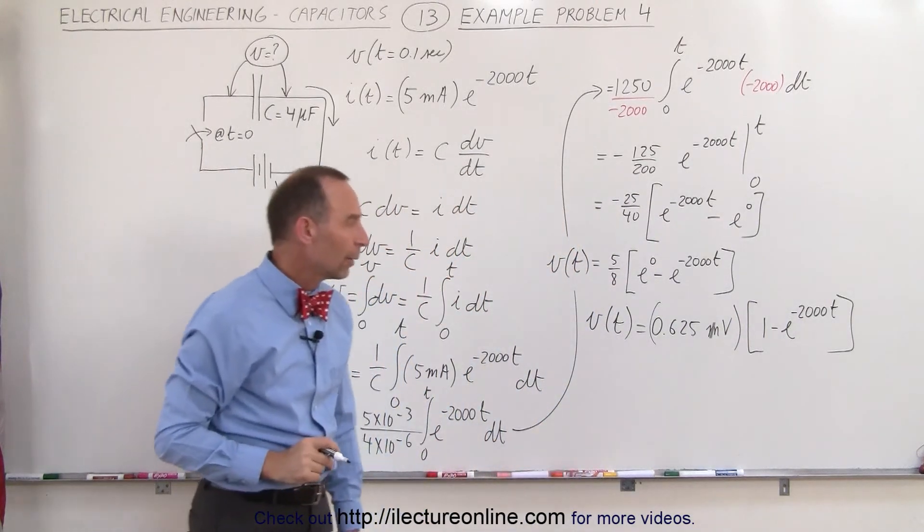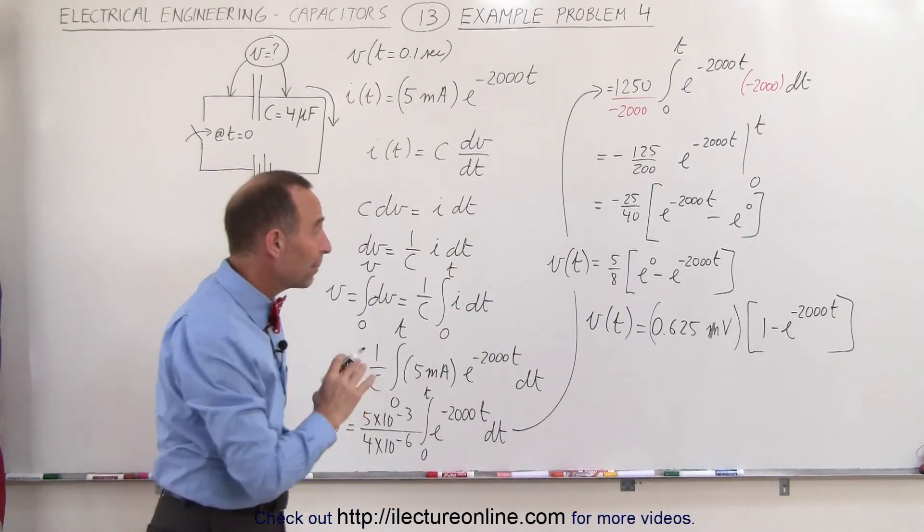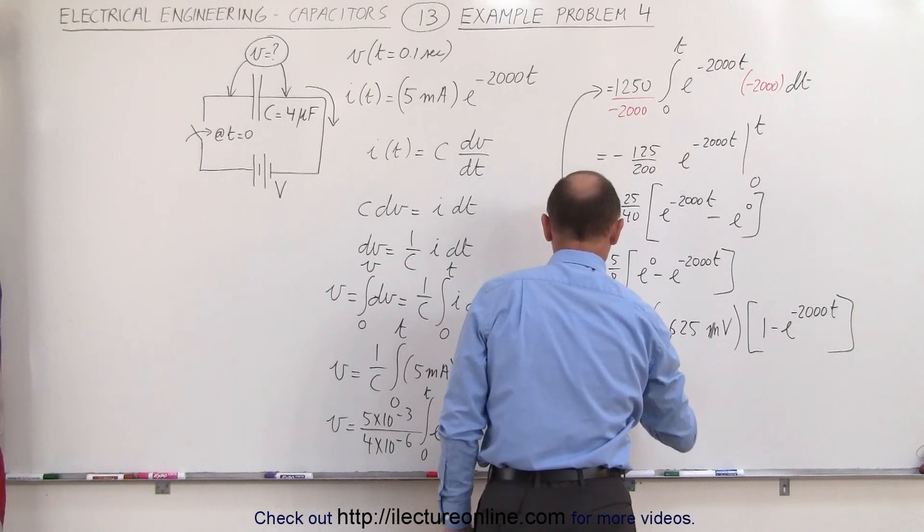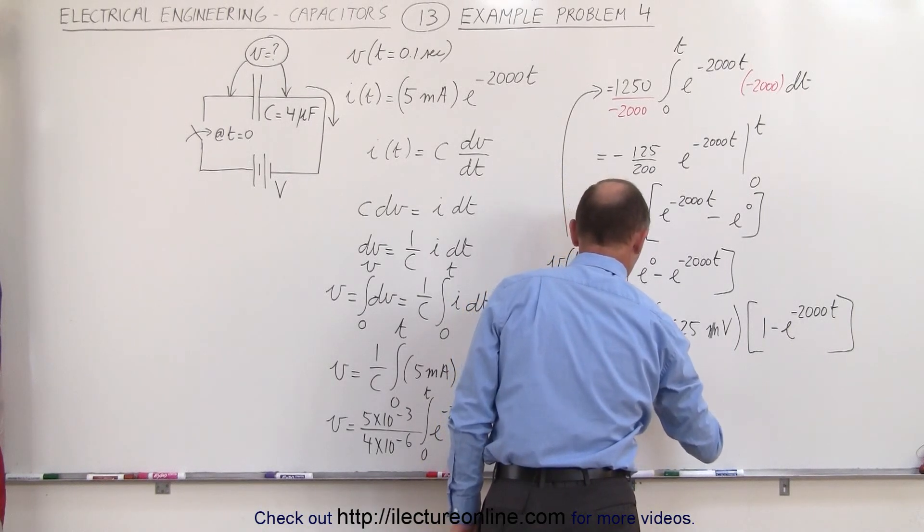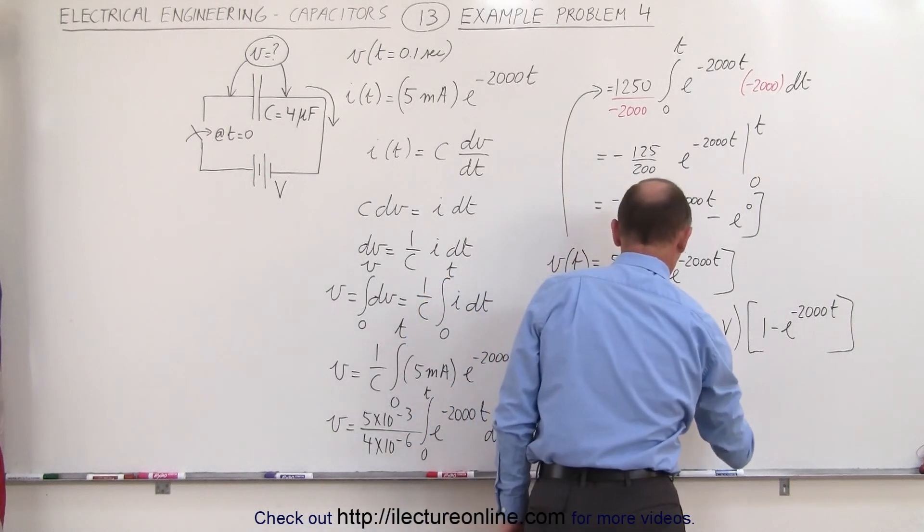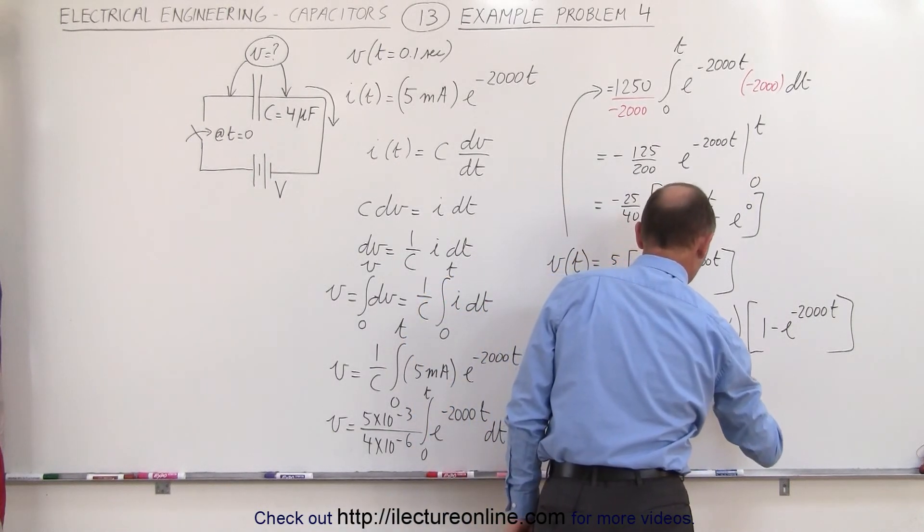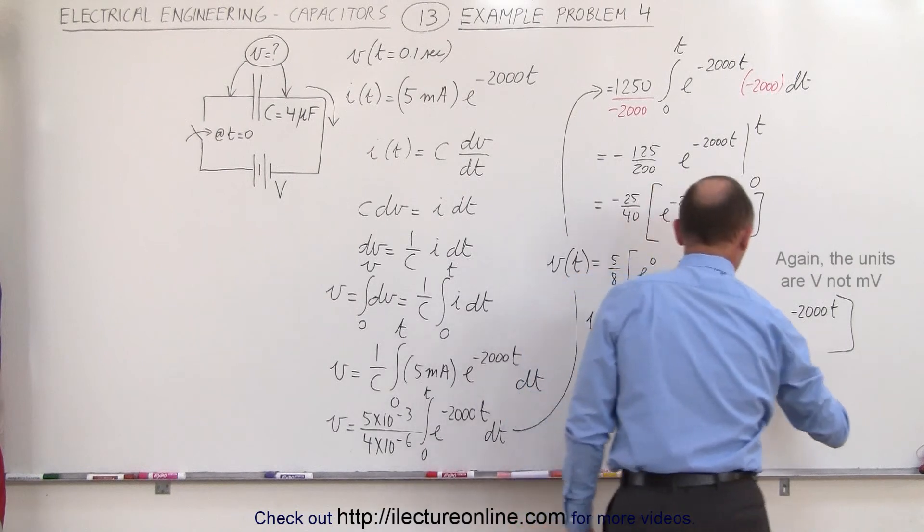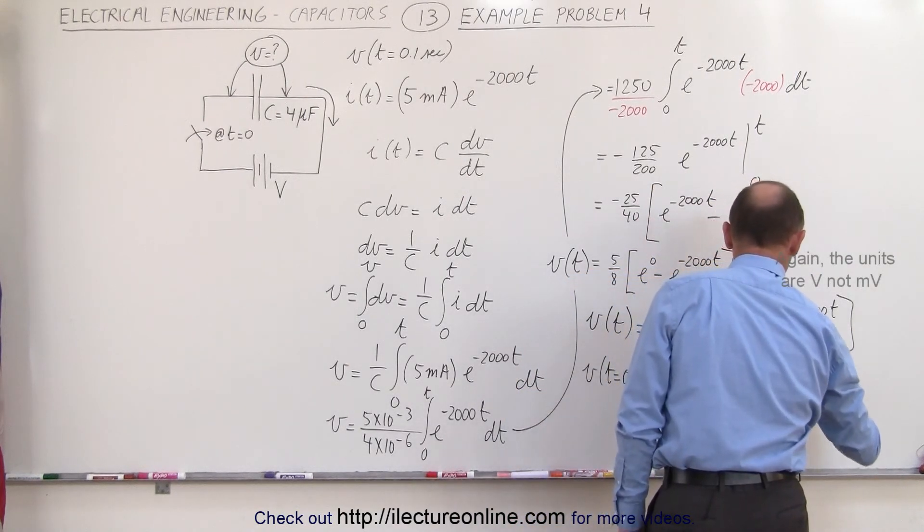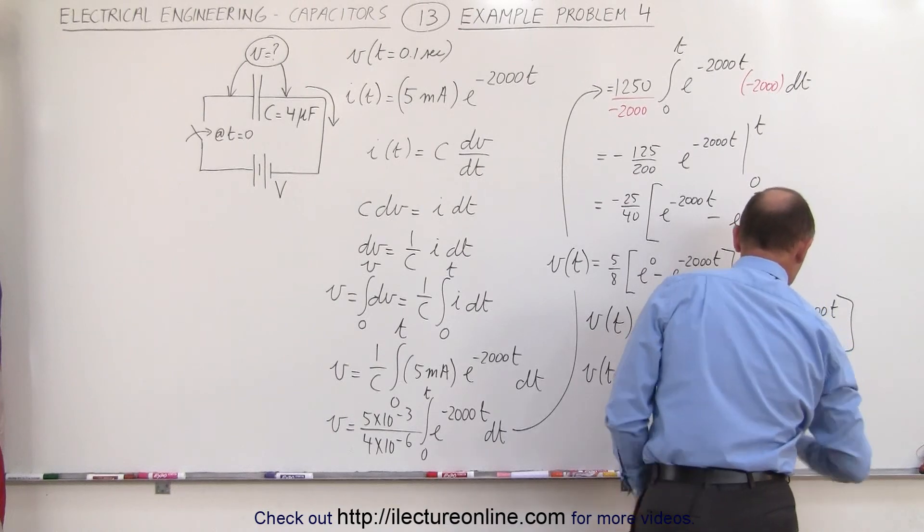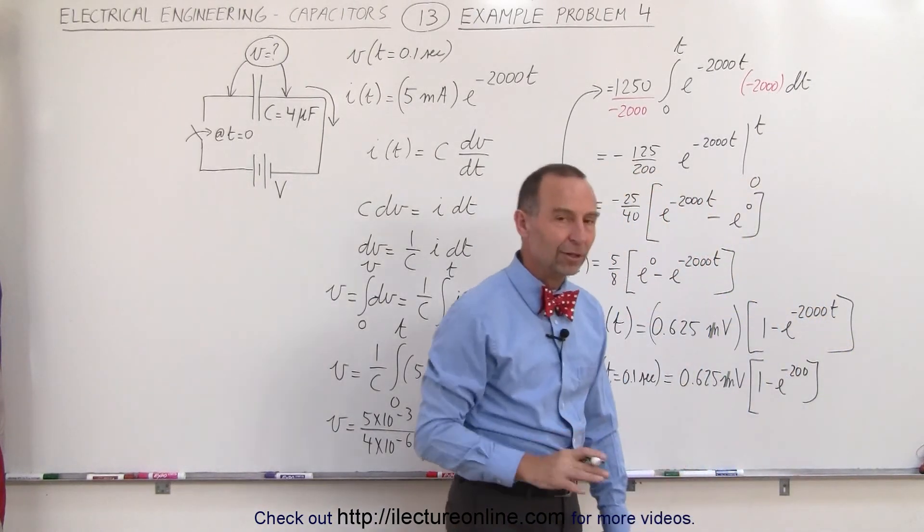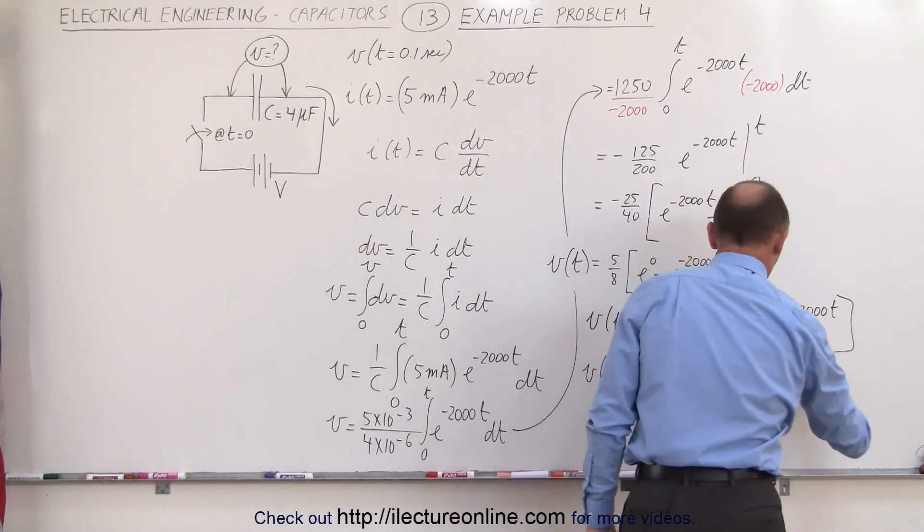And finally, what I can do now is evaluate that for a particular value of t, so v when t is equal to 0.1 seconds, I probably should have picked a smaller number, but that's okay. That is equal to 0.625 millivolts times the quantity 1 minus e to the minus 0.1 times this would be minus 200. Well, e to the minus 200, that's basically 0, so this can go to 0.